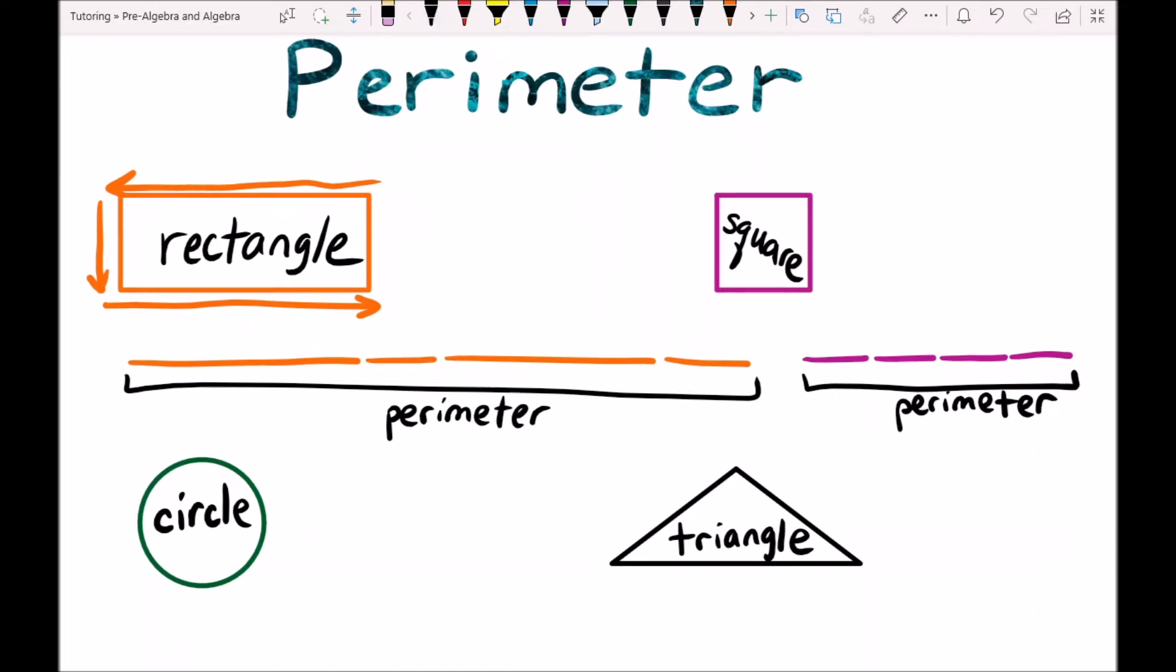So how do we calculate the perimeter of these different shapes without just measuring each side? Well, each shape has its own little formula or a way to calculate the perimeter.